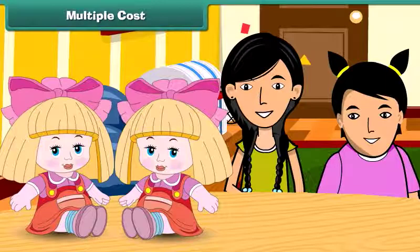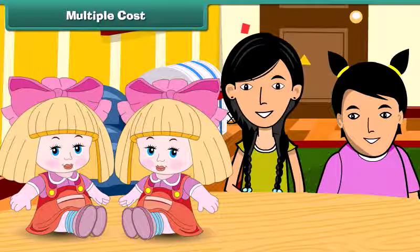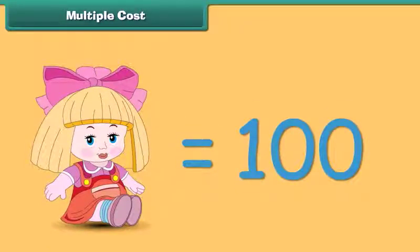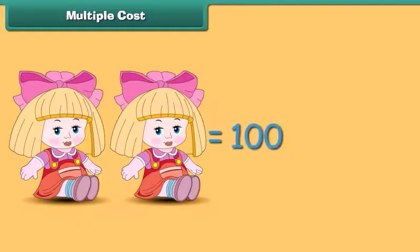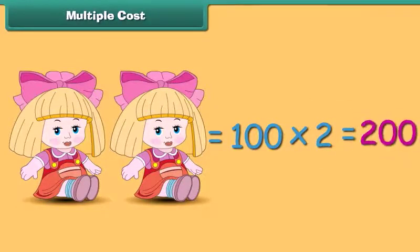Let us hear what these girls are talking. My mother bought these two dolls — one for me and one for my younger sister. The unit cost of the doll is 100 rupees. Unit cost is the cost of a single unit, so the cost of a single doll is rupees 100. The multiple cost of two dolls is equal to rupees 100 multiplied by 2, which is rupees 200. A multiple cost is the cost of more than one item, calculated as unit cost multiplied by number of items.